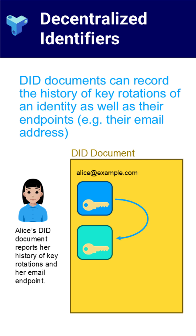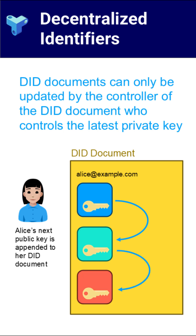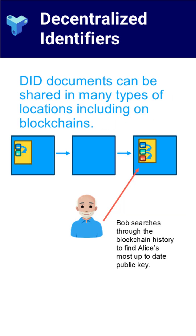A DID is a unique identifier that links to a document containing the public keys and service endpoints for that identity. If you need to rotate keys, you update the DID document. Because it's often — but not always — stored on a decentralized system, like a blockchain or other distributed ledger, anyone can verify its history. That means anyone can check which keys were valid at a given time, track updates, and confirm that the information comes from a trusted source.